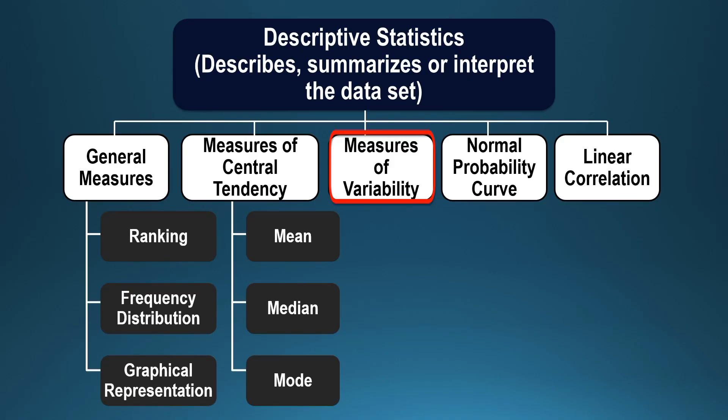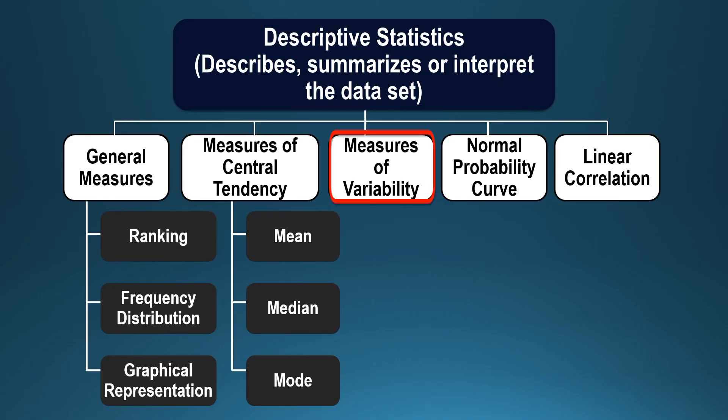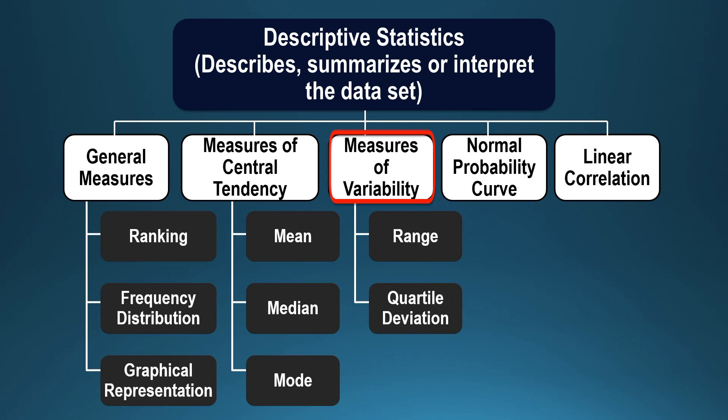Measures of variability refer to the spread of scores or the scatteredness of scores. Here, we are concerned with how much difference there is among the scores of various units or elements in the sample. One can calculate range, quartile deviation, and standard deviation. And then we have normal probability curve and linear correlation.